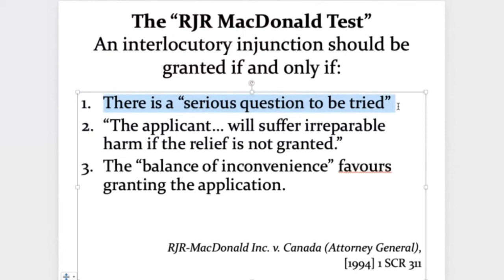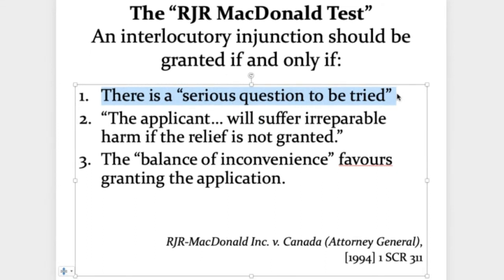Not the case here — with tobacco control, there's no reason in principle why we can't take a few months and get it right. Therefore we're only going to apply minimal scrutiny to the first branch of the test at the interlocutory stage. There's also paragraph 60: we might also get into a fuller consideration of the merits if the question of unconstitutionality presents itself as a simple question of law alone — in the rare case where there's no real factual dispute and it's purely a question of law.